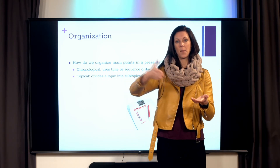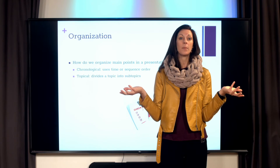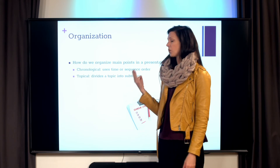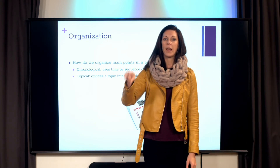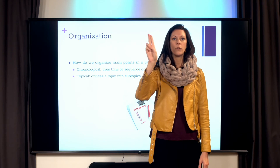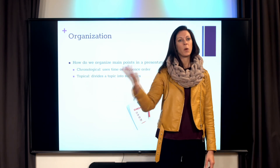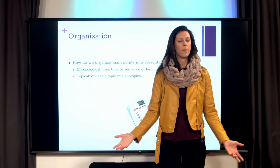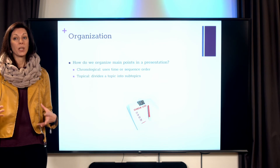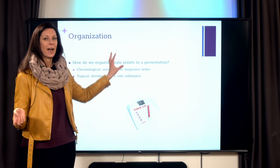If you have something that doesn't have to be done in a step-by-step process, you'd use topical order, where you take a larger topic and divide it into three subtopics. How to have a happy life is a great example — maybe you'd choose three things one would do, like staying connected to friends and family, trying new things, and a third point. Those would just be different main points and the order doesn't matter. This is important because our next video will talk about how to write your outline and place these main points in the outline format.